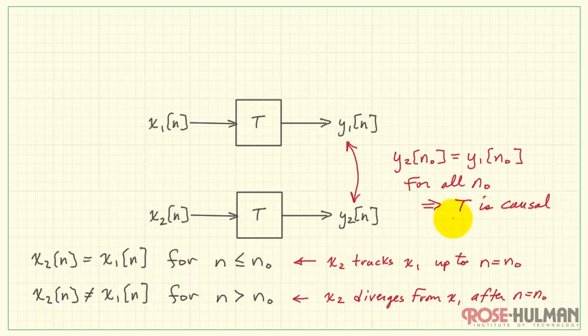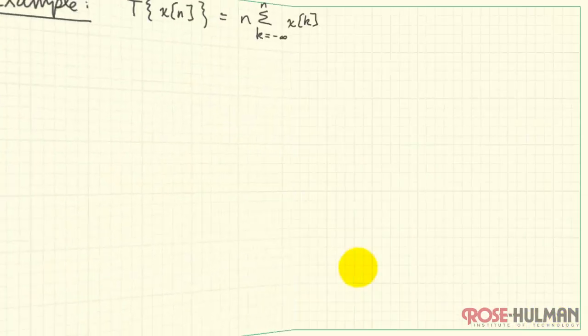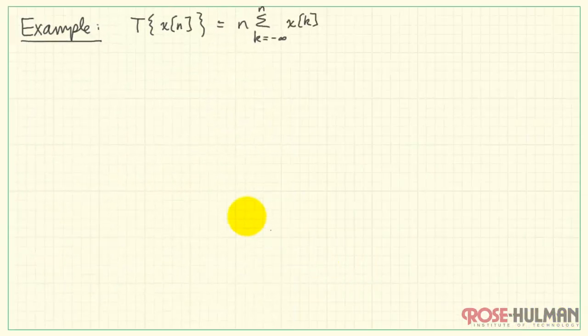And this is a bi-conditional statement. If we know that the system is causal, then we know this statement for Y2 and Y1 is valid. Essentially, we're trying to set up a thought experiment here to determine whether or not the system uses future inputs. If it does not, then it is causal.